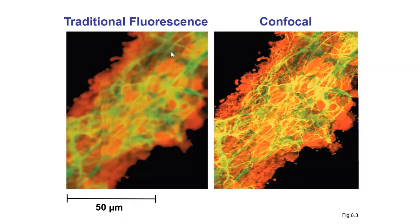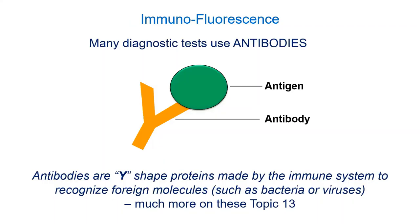There's one type of fluorescence microscopy that's really important, and we're going to talk about it later in today's lecture — it's the use of immune molecules called antibodies. Antibodies are immune proteins designed by your immune system to recognize things. Generally, you might get an infection or a vaccine, and your body makes antibodies that recognize whatever you're vaccinated or infected against. For example, if you get chicken pox, your body makes antibodies that recognize the virus that causes it.